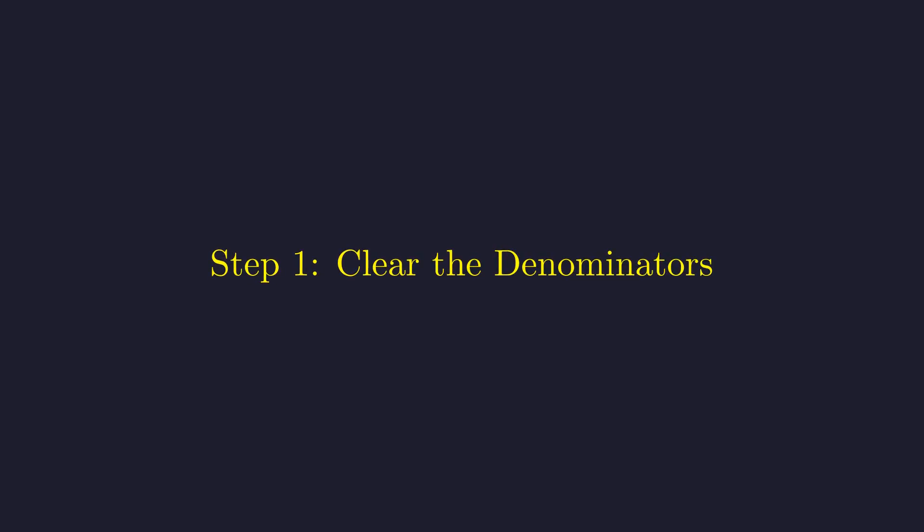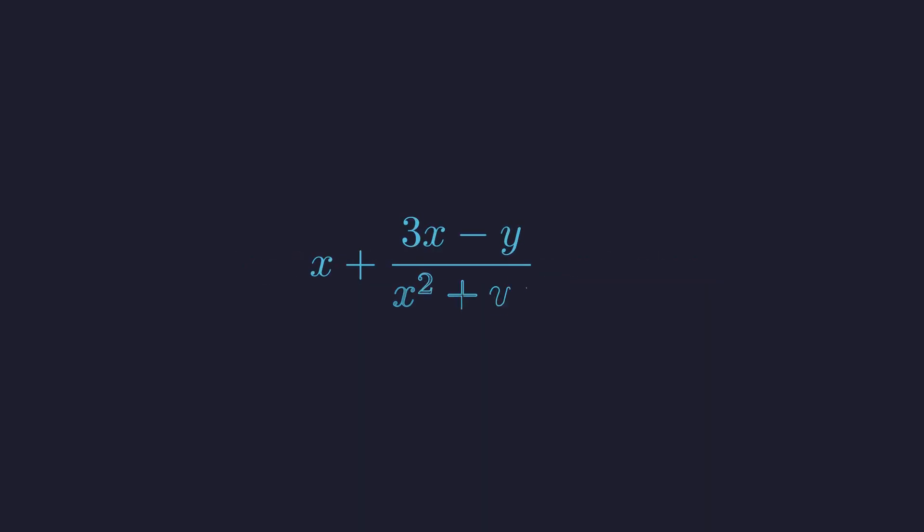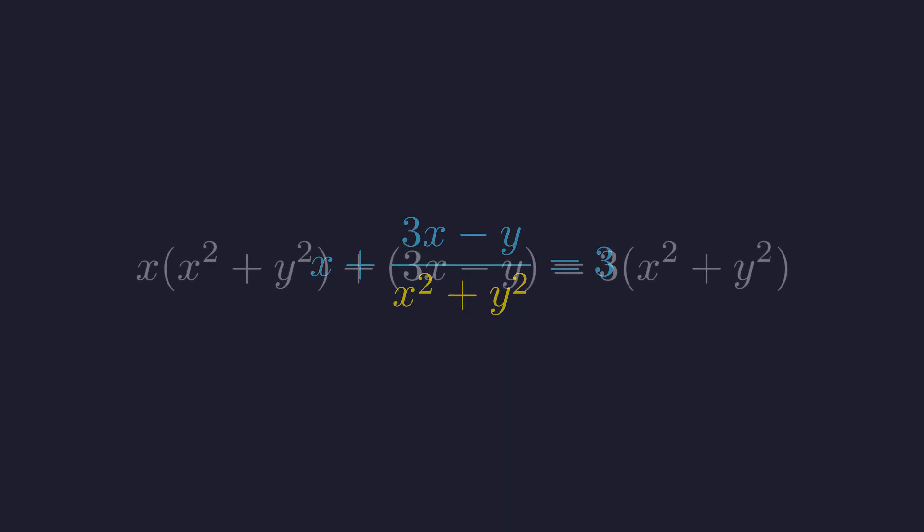Our first step is to eliminate the fractions by multiplying both equations by x squared plus y squared. Working with the first equation, we multiply both sides by x squared plus y squared to clear the denominator. This gives us x times the quantity x squared plus y squared plus 3x minus y equals 3 times the quantity x squared plus y squared.